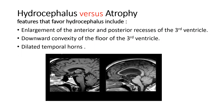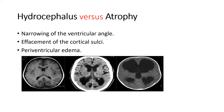Hydrocephalus versus atrophy: features favoring hydrocephalus include enlargement of the anterior and posterior recesses of the third ventricle, downward convexity of the floor of the third ventricle, and dilated temporal horns. In hydrocephalus there is narrowing of the ventricular angle and effacement of the cortical sulci, while in atrophy there are dilated sulci. Periventricular edema is more common in hydrocephalus. Imaging shows normal brain with normal ventricles, brain atrophy with dilated ventricle and dilated sulci, and hydrocephalus with dilated ventricle and obliterated sulci.